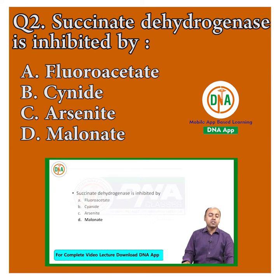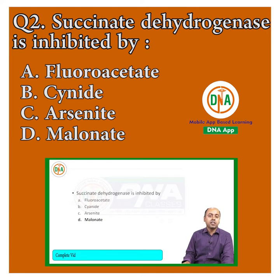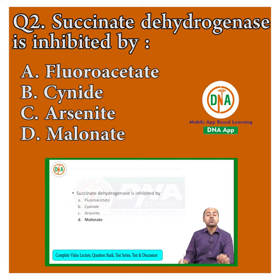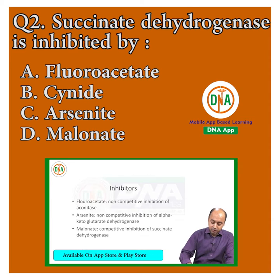Succinate dehydrogenase, which is an enzyme of the Krebs cycle, is inhibited by fluorocitrate, cyanide, arsenide, and malonate. This question is very frequently asked — inhibitors of enzymes in the Krebs cycle. So, we will first list the inhibitors.